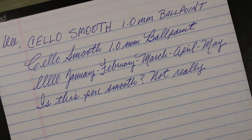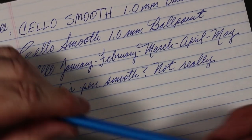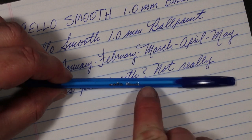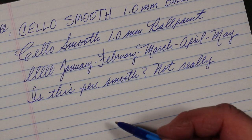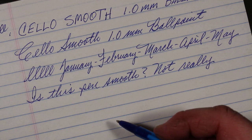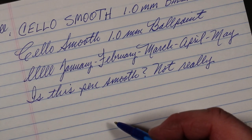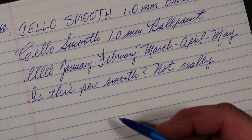This pen is called the Smooth, it says Cello Smooth. It's not really that smooth, frankly. Is it smoother than an Inkjoy? No. Is it smoother than a Bic Crystal? No, not really I don't think. Or Wright Brothers Paper Mate? No. Or even to compare it to maybe another Indian pen, a Link Pentonic? No, it is not that smooth.